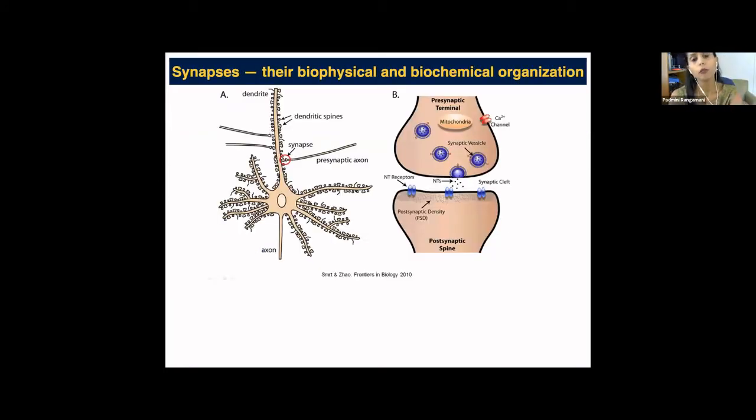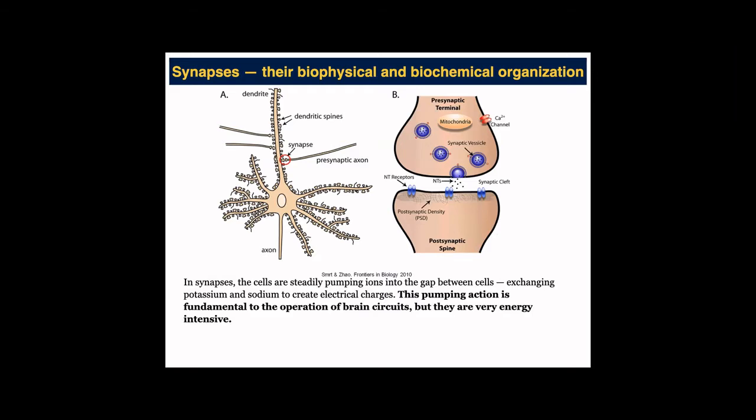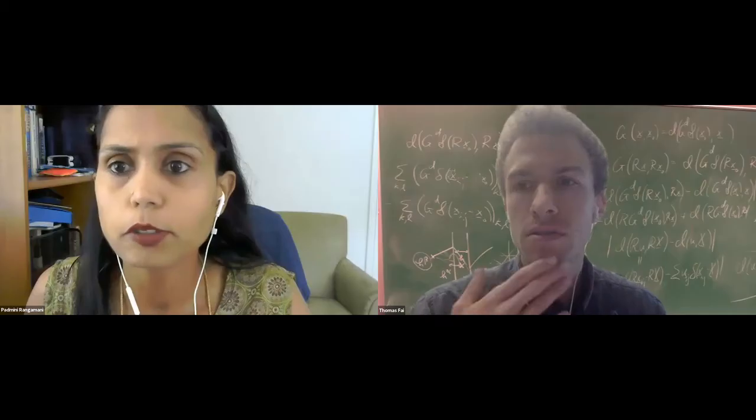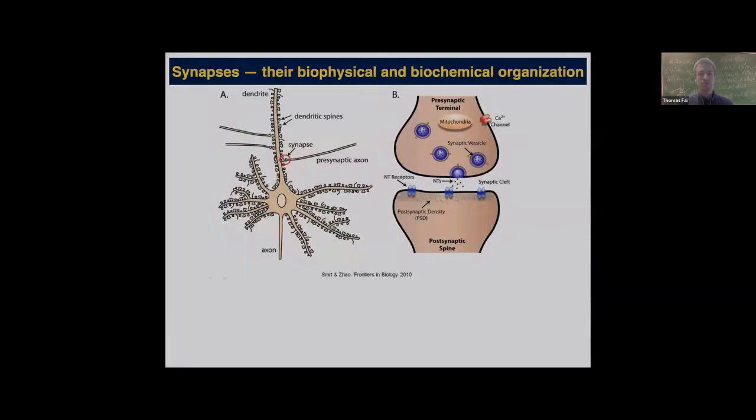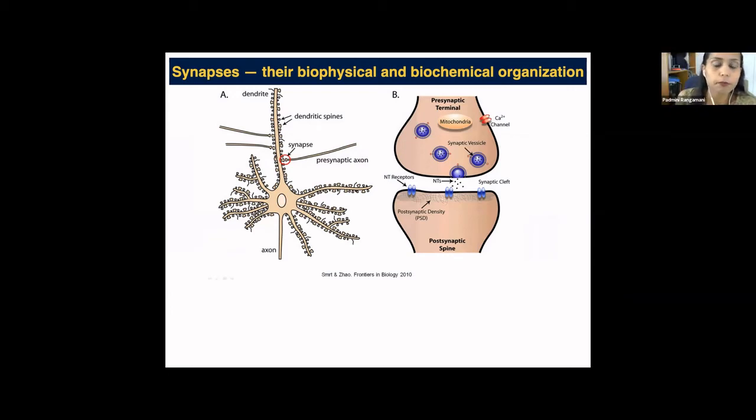Just to get us on the same page, much of what I'll be focusing on today is this little red circle noted as the synapse, where you can see a presynaptic axon coming in contact with a neuron. The parts that we have been focusing are on what is known as the postsynaptic spine.